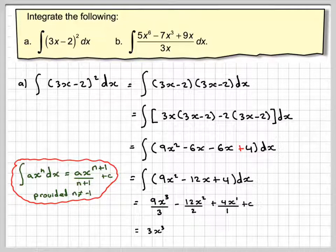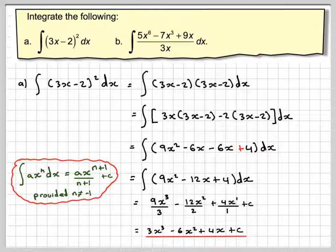Simplifying, we're going to get 9 goes into 3, 3x³ minus 12 over 2 which is 6x². 4 divided by 1 is just 4x + c. Like I said, some of you will be able to go directly from here to here.